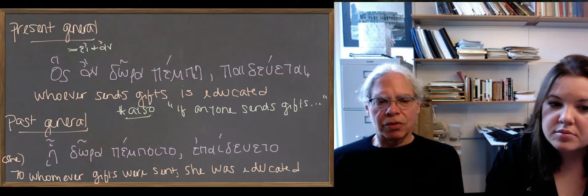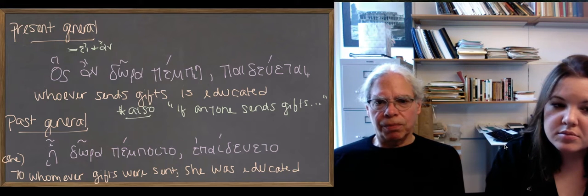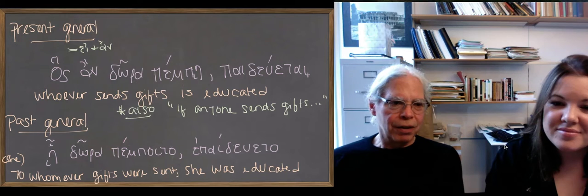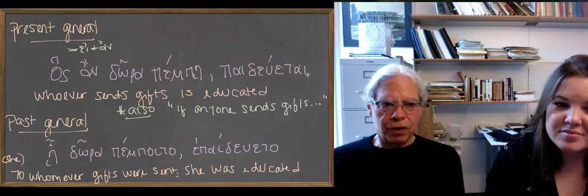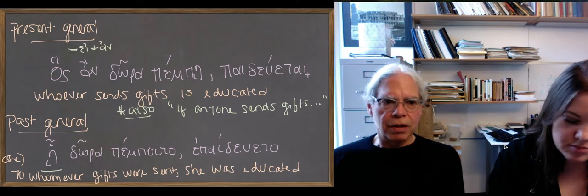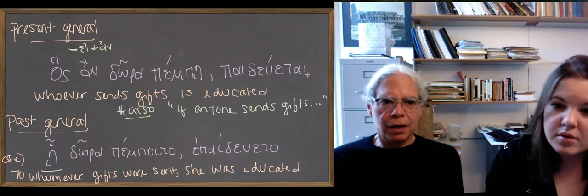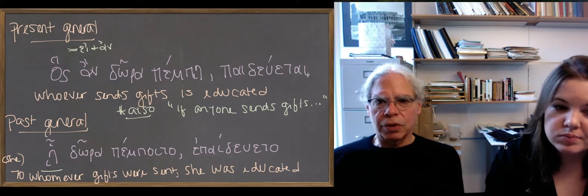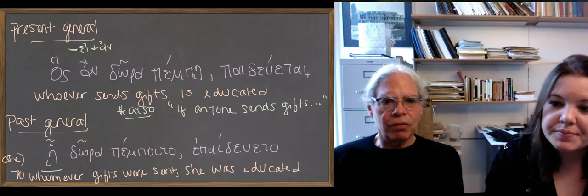The past general version, just the past version, we've changed the pronouns around so you don't get fixed expectations that the relative pronouns are always going to be nominative. You can do He, that's the dative singular, any woman to whom gifts were sent, or to whichever woman gifts were sent, she was educated. Or if gifts were sent to any woman, she was educated, right? Another way of doing it.